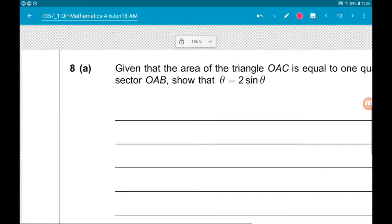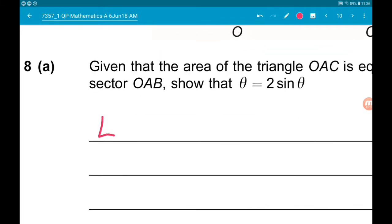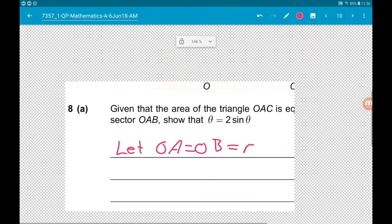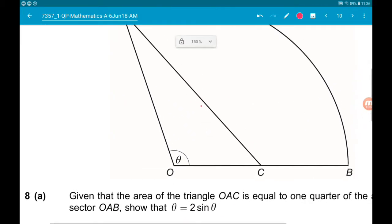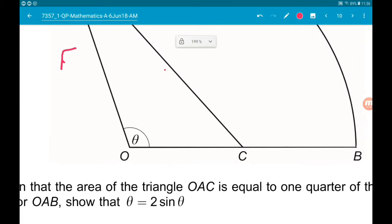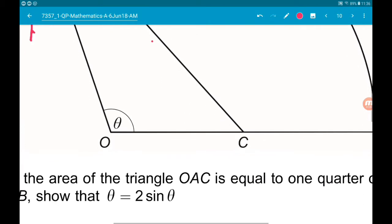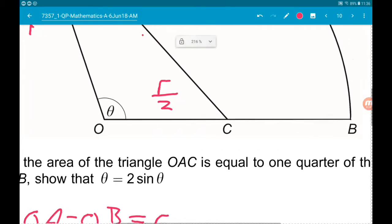So, let's let O, A equal O, B, which is going to equal R, the radius of the circle. So, that makes our notation a little bit nicer. Now, in terms of the triangle, then, we know that this length is R over two. O, C is R over two.